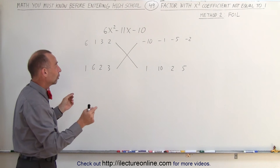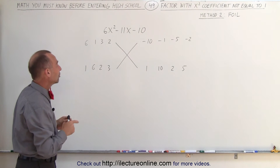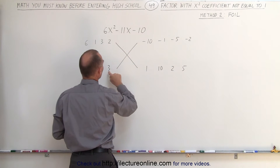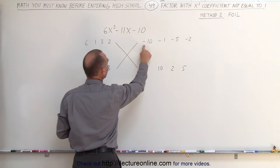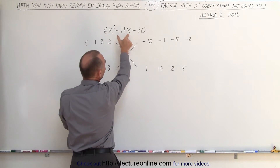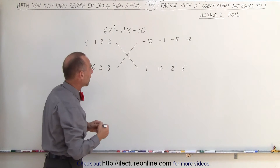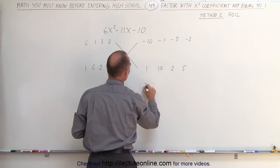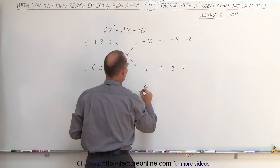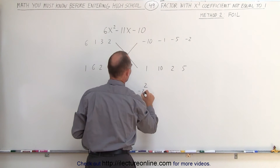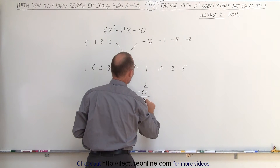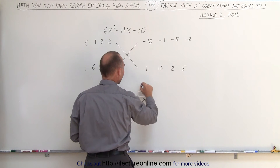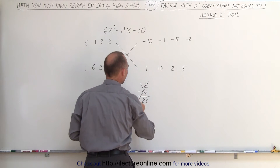We're looking for the combination where — for example, I'm going to multiply 2 times 1, and multiply 3 times negative 10, and when I add them together I should get the middle term. So here we have 2 times 1, which is 2, and 3 times negative 10, which is negative 30. When I add them together I get negative 28, which is not equal to negative 11, so that's not a valid combination.